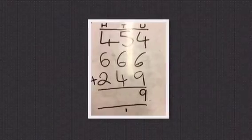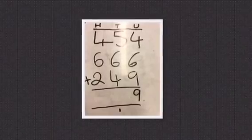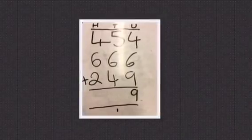You start with the units. The answer in this example is 19. So you put the 9 in the units column and the 1 in the tens column.